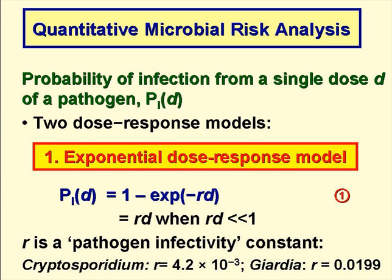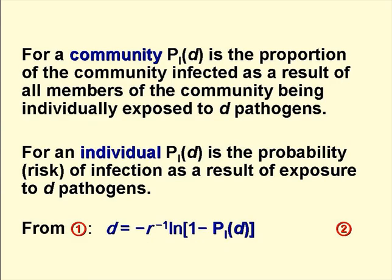R is a pathogen infectivity constant, and its value for Cryptosporidium is 4.2 times 10 to the minus 3, and for Giardia, 0.0199. For a community, PID is the proportion of the community that becomes infected as a result of all members having been exposed to a single dose D of a pathogen, and for an individual, PID is the probability or risk of infection as a result of having been exposed to the single dose D.